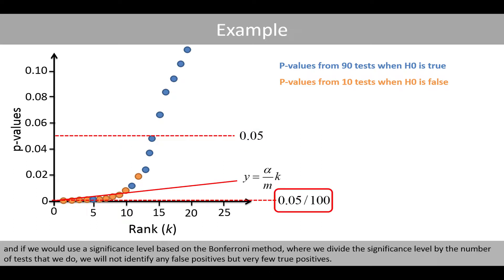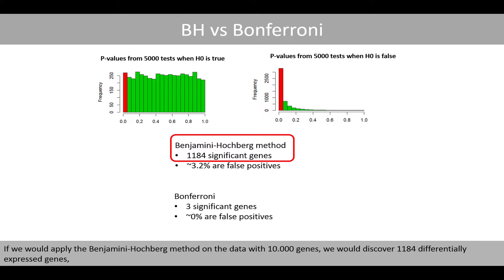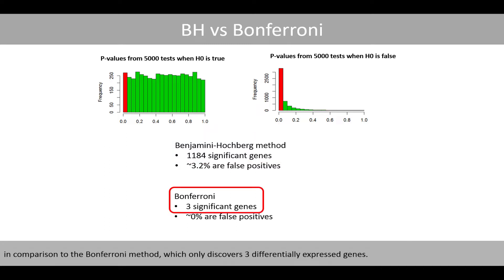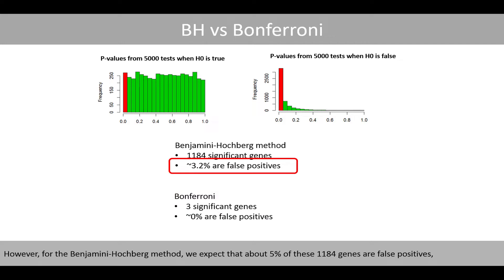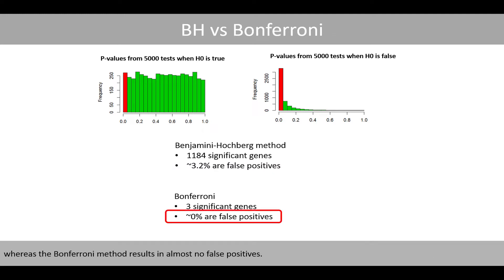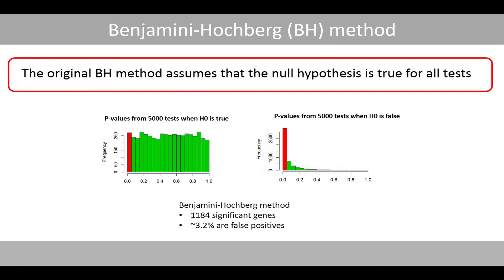If we use a significance level based on the Bonferroni method — dividing the significance level by the number of tests — we will not identify any false positives, but very few true positives. If we apply the Benjamini-Hochberg method on the data with 10,000 genes, we would discover 1,184 differentially expressed genes, compared to the Bonferroni method which only discovers 3 differentially expressed genes. However, for the Benjamini-Hochberg method, we expect that about 5% of these 1,184 genes are false positives, whereas the Bonferroni method results in almost no false positives.